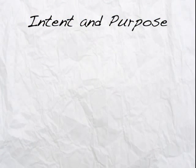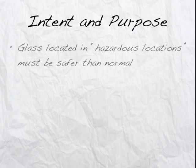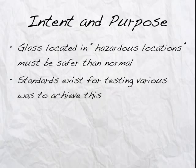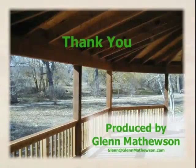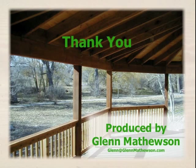So let's look at some intent and purpose and wrap up this session. We've learned that glass located in hazardous locations, where human impact is more likely, must be safer than normal glass. There are standards that exist for testing various ways to achieve this — either tempered glass that breaks into small pieces, or some type of film that holds the glass together and does not allow it to break apart. And finally, the method of safety glazing must be verifiable, either with identification, a label, or some other affidavit showing the test standards and that indeed it is safety glazing. My name is Glenn Mathewson, and I thank you for learning with me today.